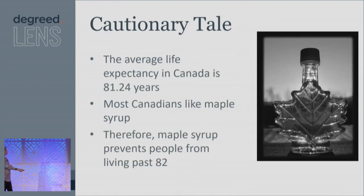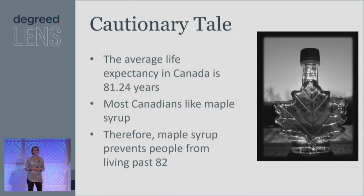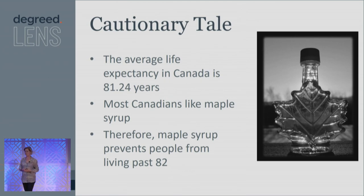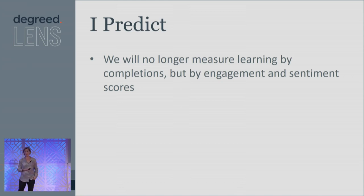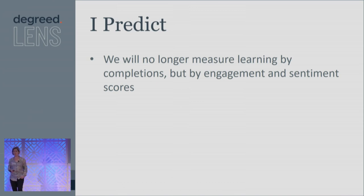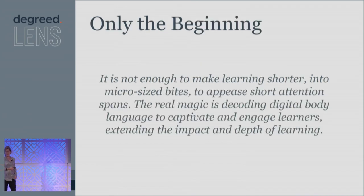Cautionary tale about all of this. I'm Canadian — the average life expectancy in Canada is 81.24 years, and most Canadians like maple syrup, therefore it kills us. It doesn't. So be cautious when you're looking at your data — dig deeper, challenge things. But absolutely, you do want to be looking at your data. I would also predict — and I've mentioned this before — we'll no longer be measuring learning by completions, but by engagement and sentiment scores. It will no longer be a metric to say that somebody completed 100% — maybe the benchmark will be 65%, or even lower, as long as they're meeting the performance outcomes. But this is going to become more critical than just how many bums in seats you had and how many test scores achieved your 80%. And this is what I'd like to end with, because I really think that this is only the beginning.